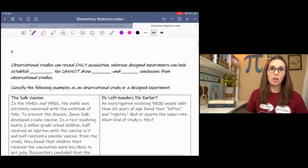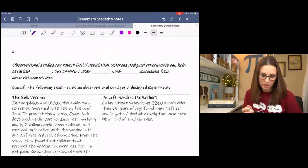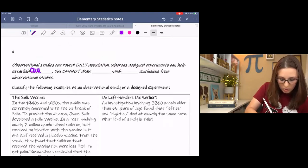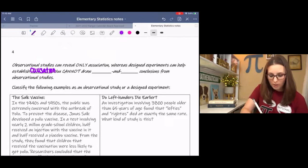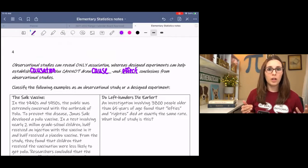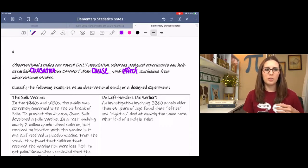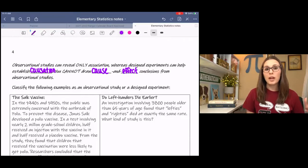Something really important that we need to note about observational studies is that observational studies can reveal only association, whereas designed experiments can help establish causation. You cannot draw cause and effect conclusions from observational studies. In observational studies, there are way too many confounding variables to confidently draw a cause and effect relationship between variables. So, for example, the bathroom situation that I explained, if you're in a bathroom and you're watching and the people know that you're watching, then they may wash their hands even though they don't normally.